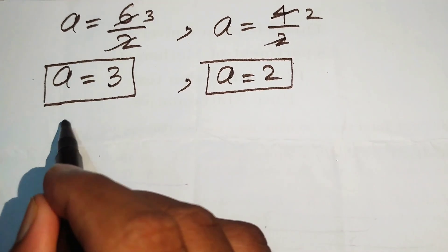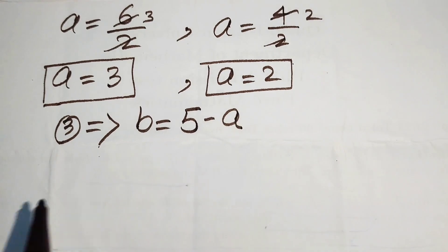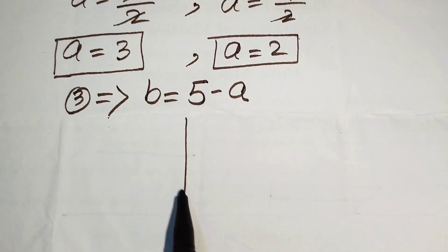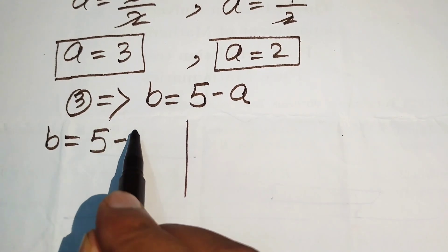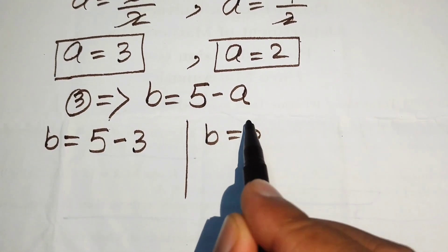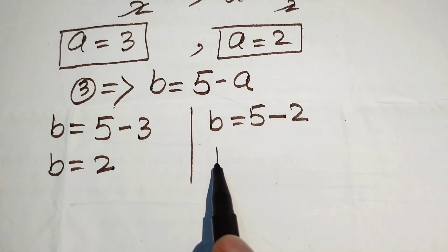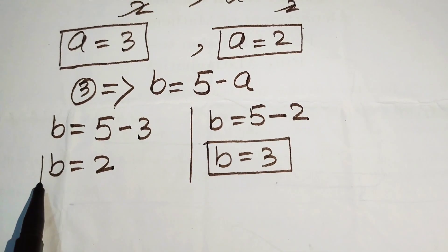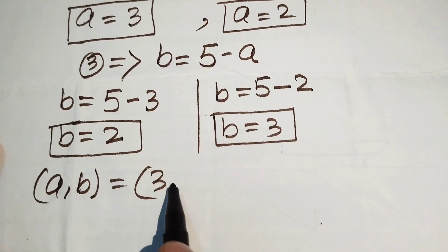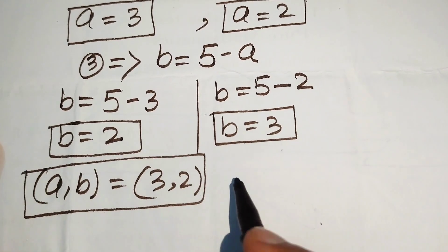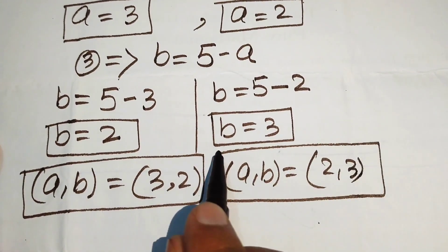Using equation number 3, which is b equals 5 minus a: when a equals 3, b equals 5 minus 3 equals 2; and when a equals 2, b equals 5 minus 2 equals 3. So the two solutions are (a, b) equals (3, 2) and (a, b) equals (2, 3).